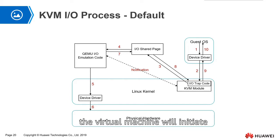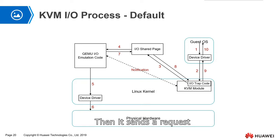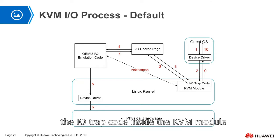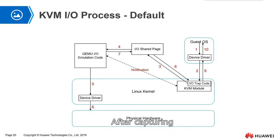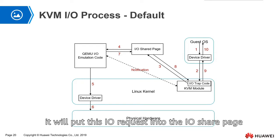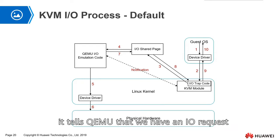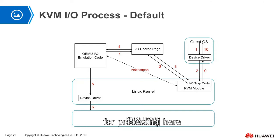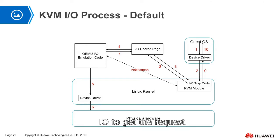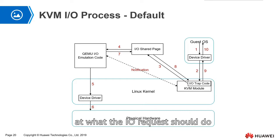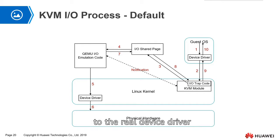The first step is that the virtual machine will initiate an IO operation request, then send a request to its virtual device driver. Then the IO trap code inside the KVM module will capture this IO request. After capturing, it will put this IO request into the IO share page. At the same time, it tells QEMU that there is an IO request for processing. Then QEMU goes to the share page to get the request, and takes a close look at what the IO request should do.